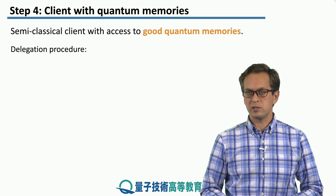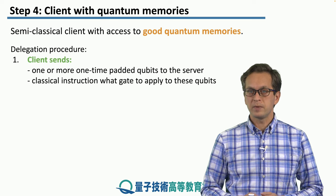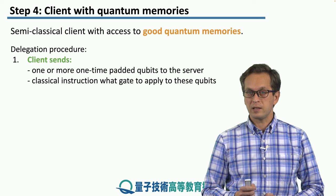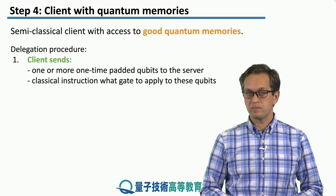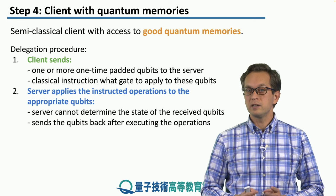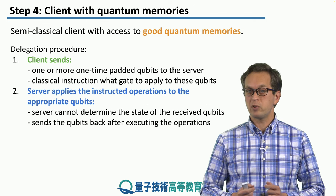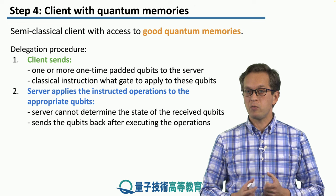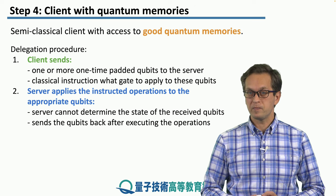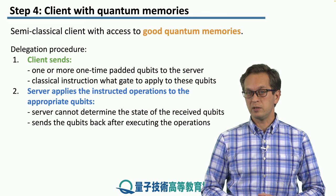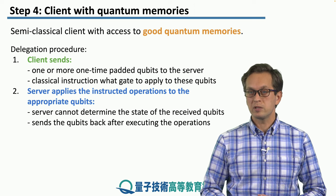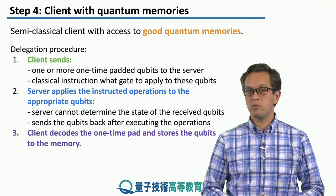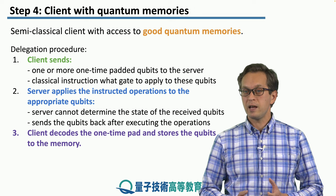Let's see how the delegation procedure proceeds. Number one: the client sends one or more one-time pad qubits to the server, along with the classical information — what gate to apply to these qubits. Number two: the server applies the instructed operation to the appropriate qubits. Remember, the server does not know the state of the qubit because they are one-time padded, as we discussed in the previous step. After the application of the appropriate operation, the server returns the qubits back to the client. And the last step: the client decodes the one-time pad on the stored qubits and loads them into memory.